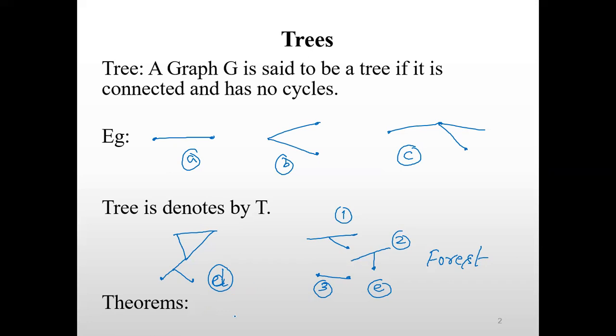So the next thing is, if a tree consists of n vertices, then the edges will always be cardinality of E, that is total number of edges present in the tree is equal to n minus 1. So n is the total number of vertices present in the tree and edges will always be n minus 1.